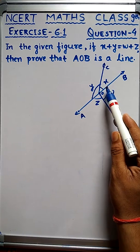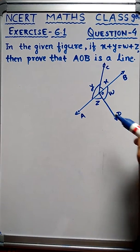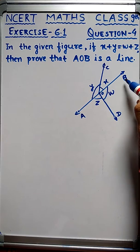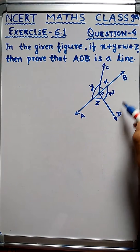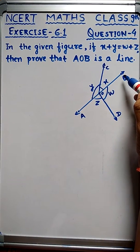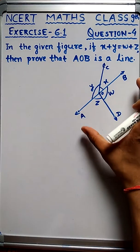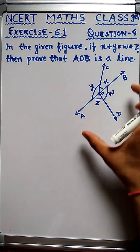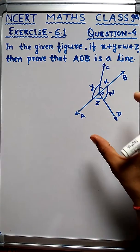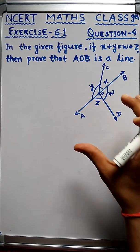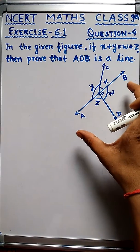I want to tell you that angle x plus y equals angle w plus z, so we will prove that AOB is a straight line. You can see an arrow here, this is a ray. This is a cut mark here indicating a particular length on the line.